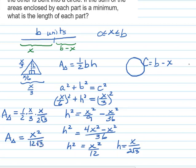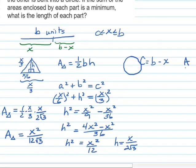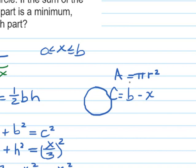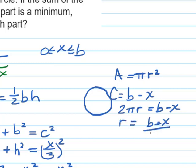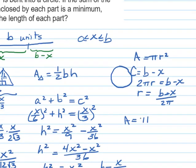Now let's talk about the area of the circle. To find the area of a circle we use area equals pi R squared, so we need to know the radius. We know the circumference is B minus X, and circumference equals 2 pi times the radius. Solving for the radius, R equals B minus X over 2 pi. We can plug that into our area formula: area equals pi times the quantity B minus X over 2 pi, squared.